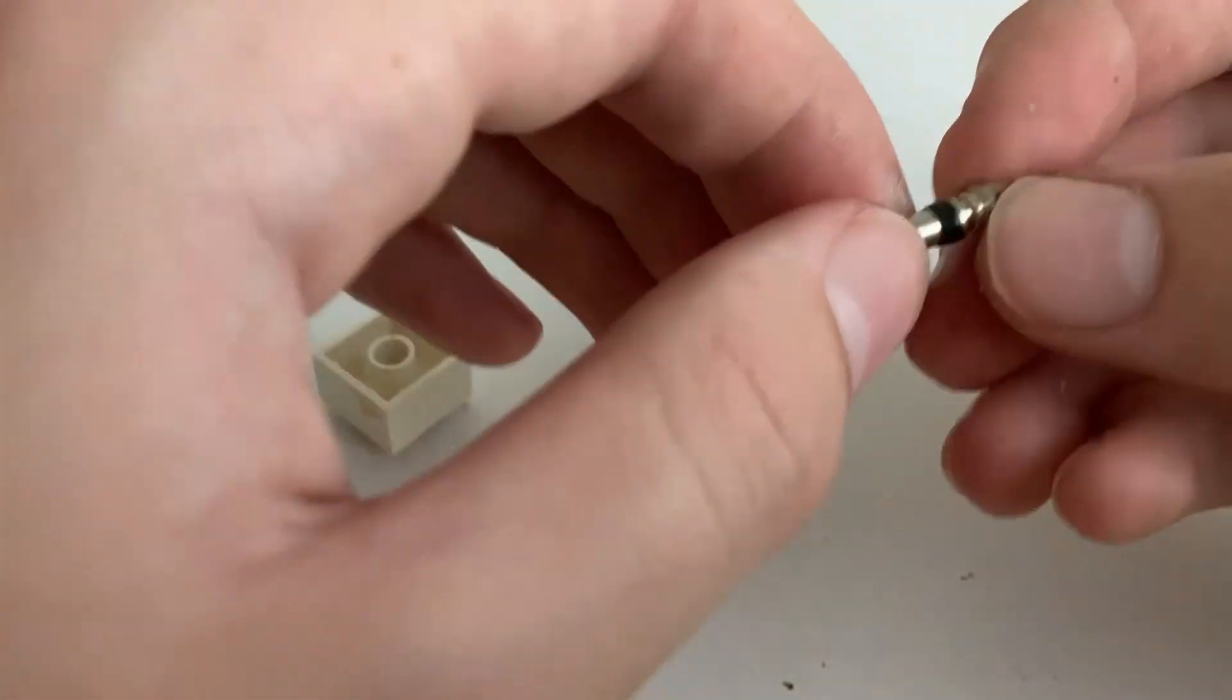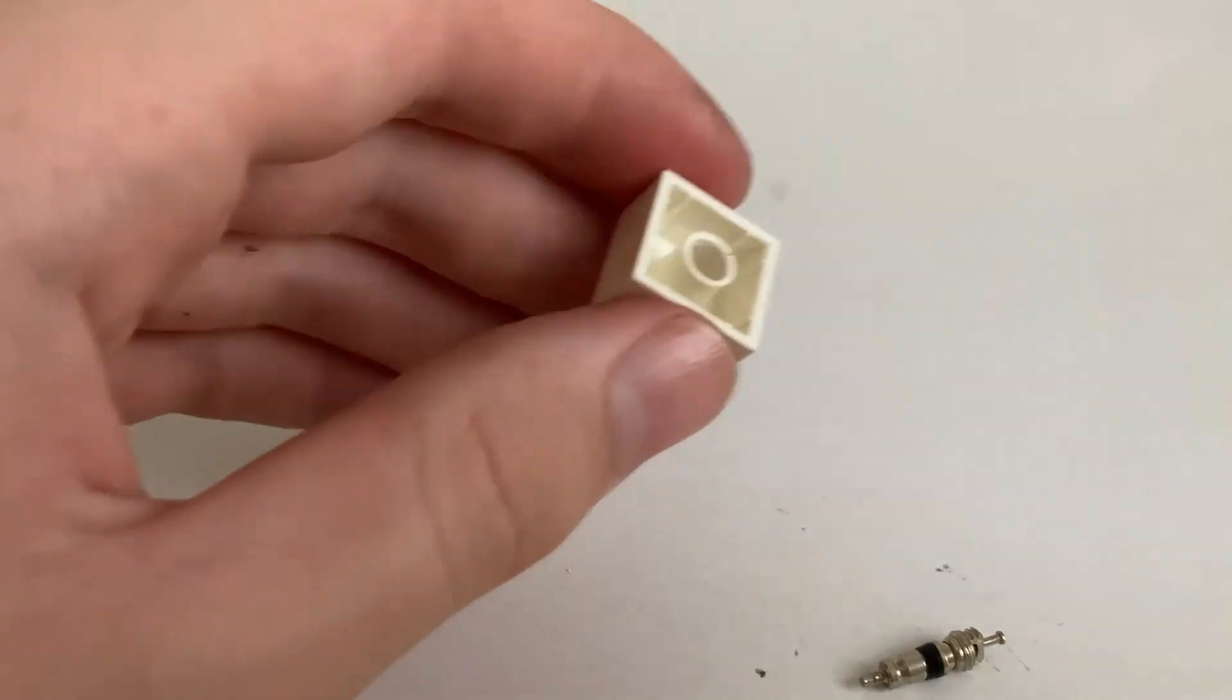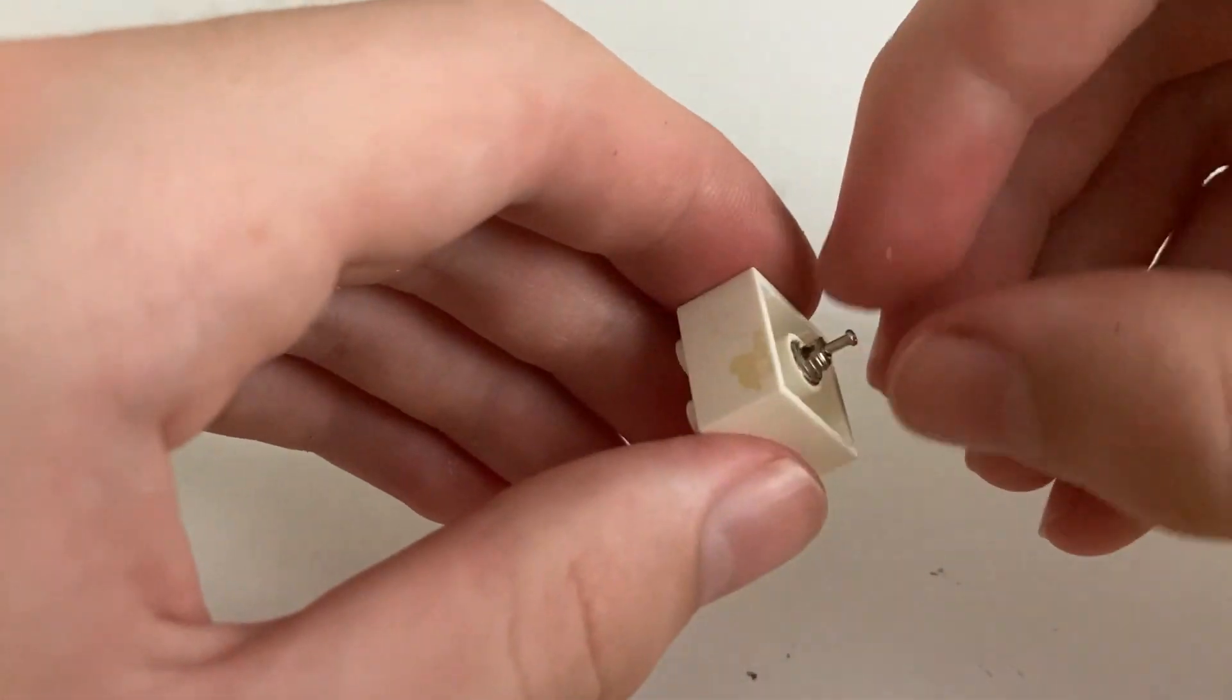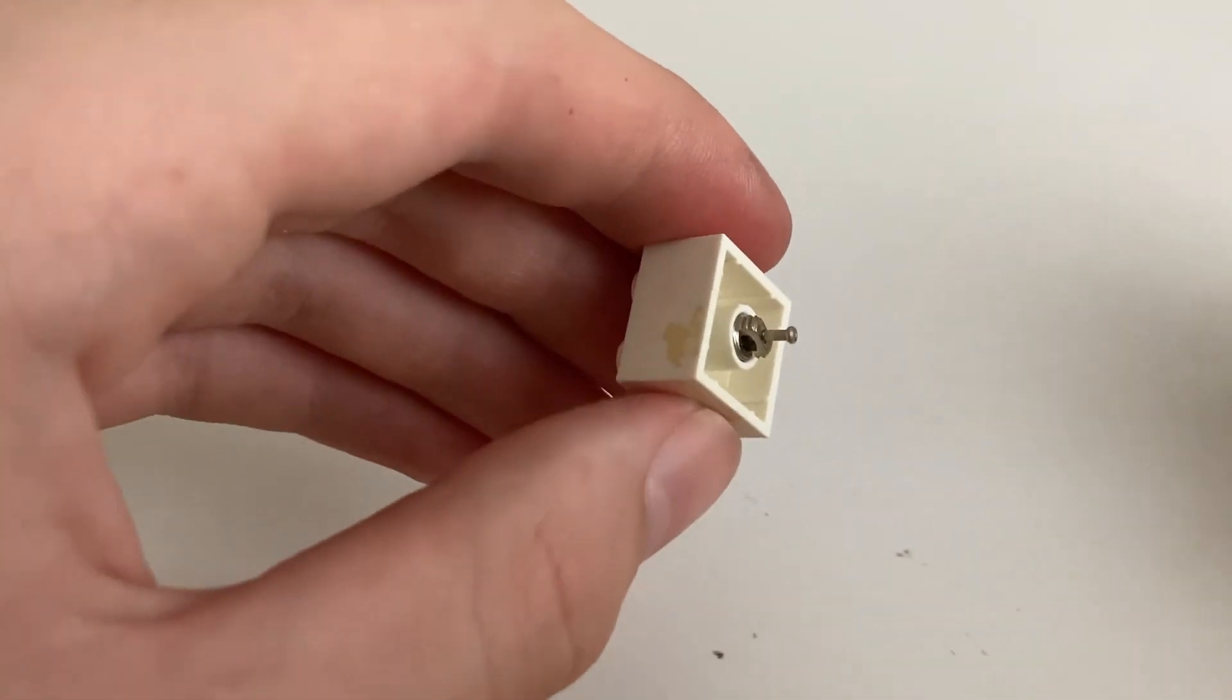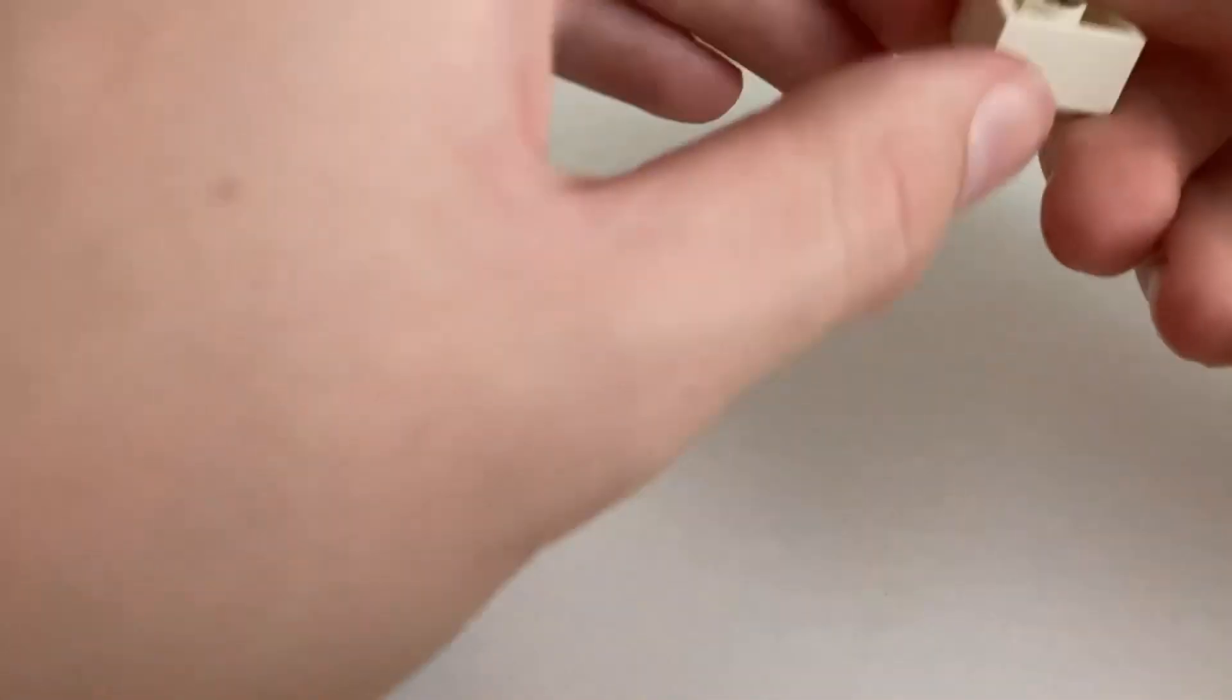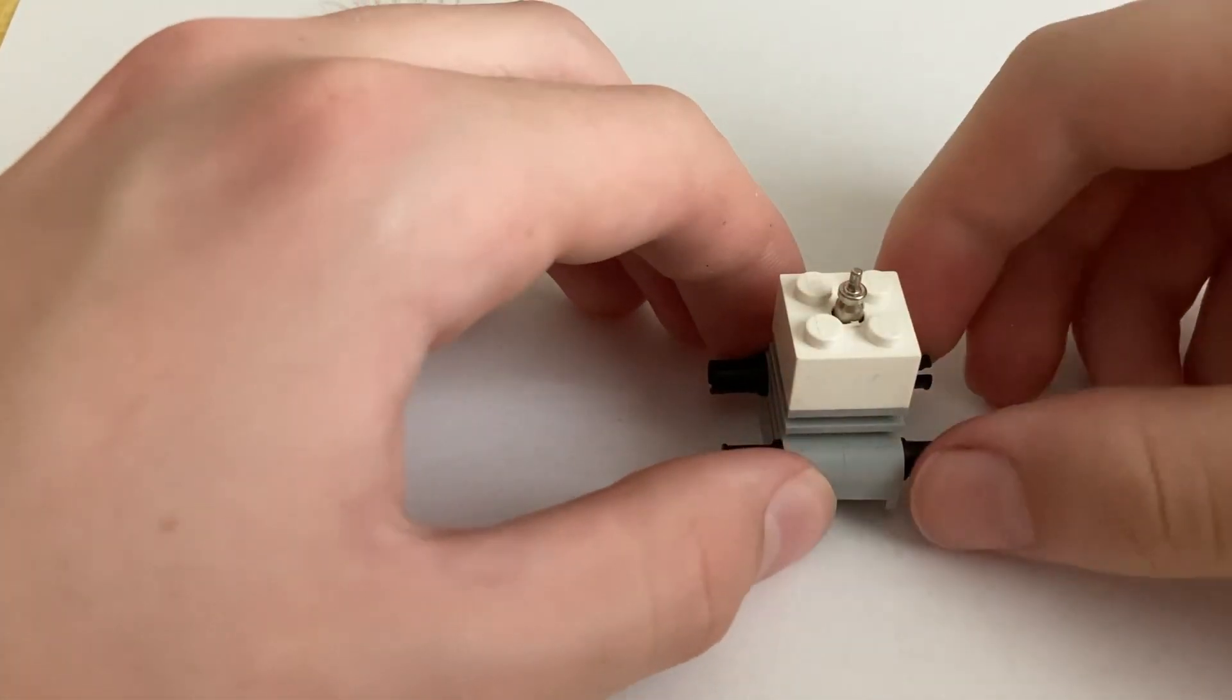When you're adding the tire valve to the 2x2 brick, make sure to add a little bit of super glue along the inside here so that when it's finally in the right spot then it'll seal correctly, or else the engine won't run. Next, once the tire core is added, you want to add glue all along the outside of here and then glue that like this.